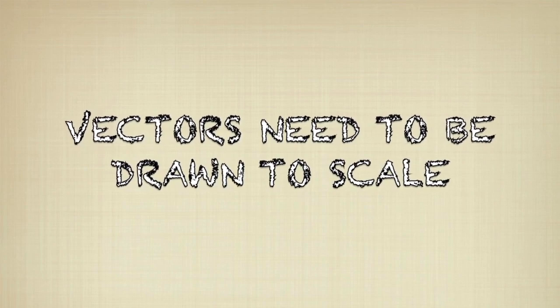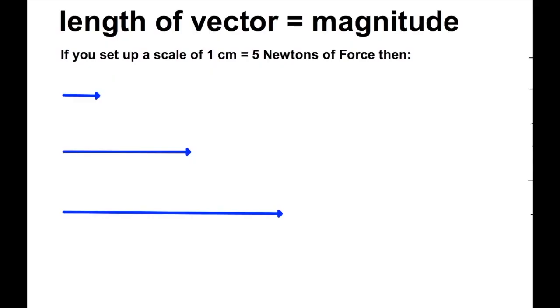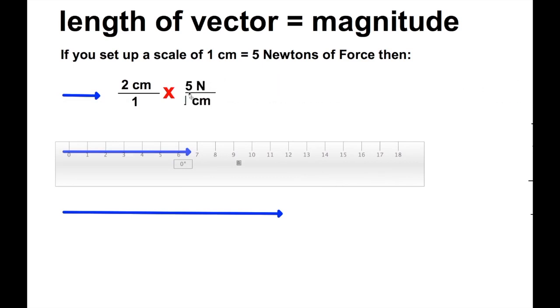Vectors need to be drawn to scale. In our first lab you'll be doing this, and when you establish a scale for a vector you have to stay with it. For example, if I have a scale of every centimeter of my tail is going to be 5 Newtons of force, then my first vector which is 2 centimeters represents a total force of 10 Newtons. I can do that by multiplying it by my scale: 2 centimeters times 5 Newtons per centimeter. That helps me establish my scale. So it's very important.